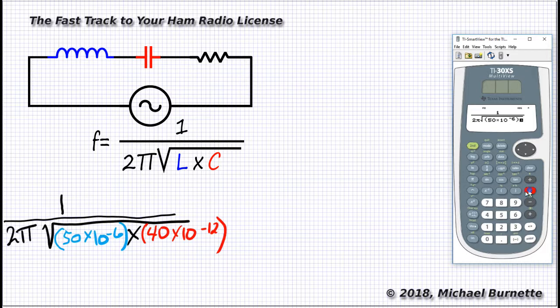Bump that cursor over 1 so that the parentheses is closing off that whole expression, and not just the exponent. Times, parentheses, 4, 0, times 10 to the nth, negative key, 1, 2, bump it over 1, close the parentheses, take a look at it. That's exactly what we wrote out. Great. Hit enter.